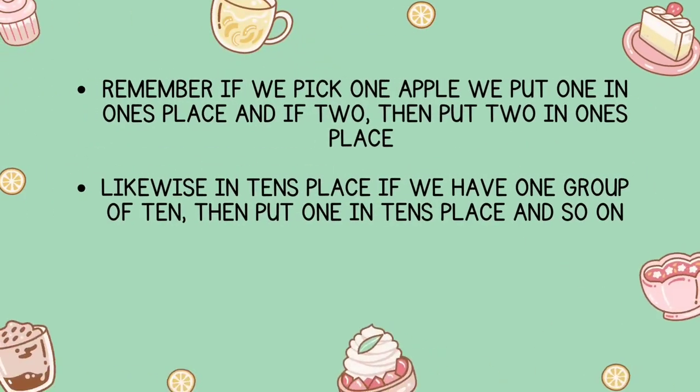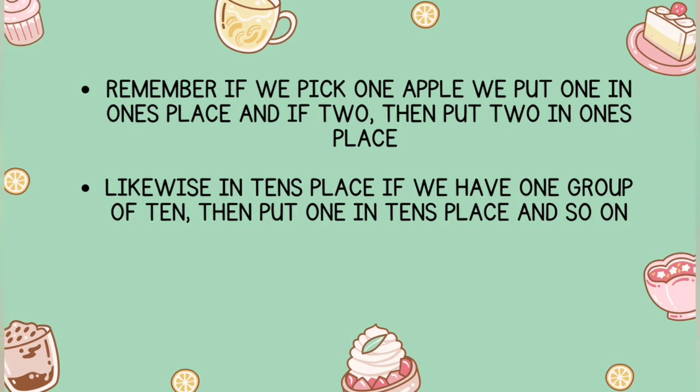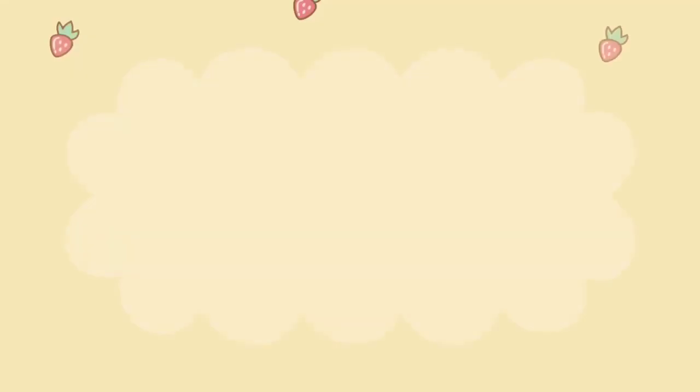Using these two number places together lets us represent amounts that are in between groups of tens. For example, if we have picked 30 apples, there will be 3 in the tens place because we have 3 groups of 10, but 0 in the ones place because there are no individual apples left over. If we have picked 32 apples, there will be 3 in the tens place and 2 in the ones place, representing 2 individual apples not in a group of 10.